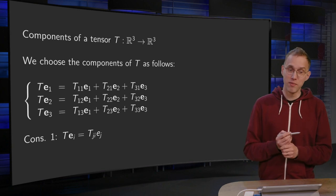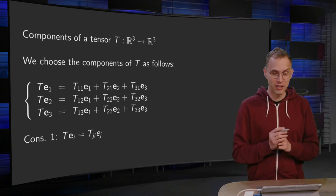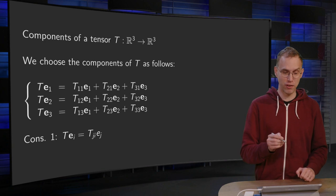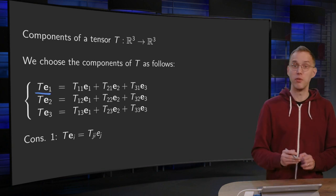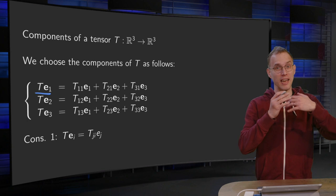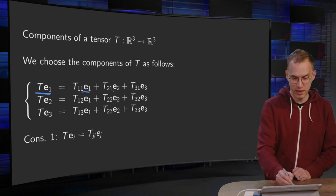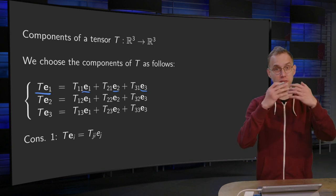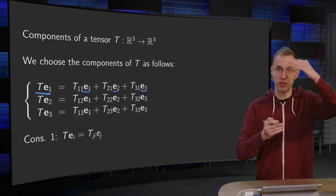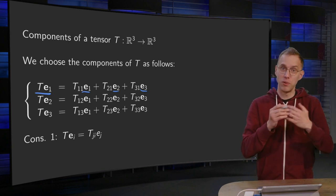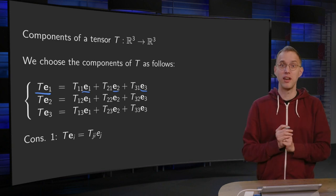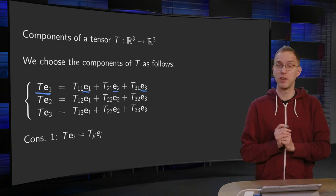Okay, we will define the components of our tensor T as follows. Suppose we have our T of E1. Then we say we can expand this T of E1 in E1, E2, and E3, of course. T of E1 is some vector with some components. So we can expand the vector T of E1 in our standard basis.